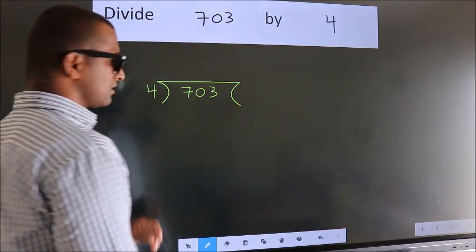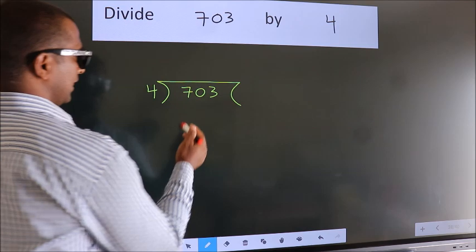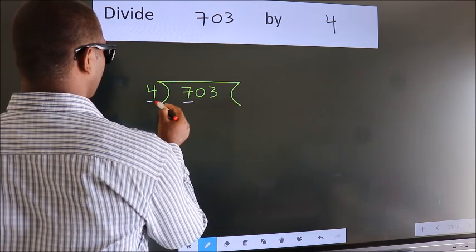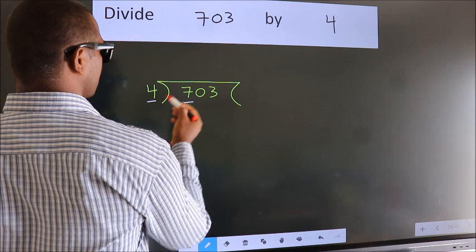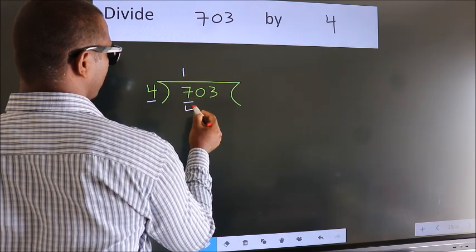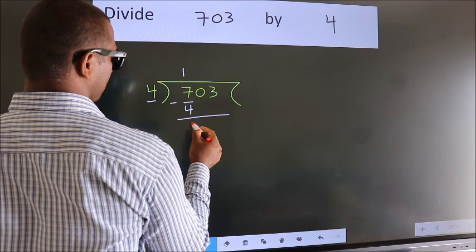This is your step 1. Next, here we have 7, here 4. A number close to 7 in 4 table is 4 once 4. Now we should subtract. We get 3.